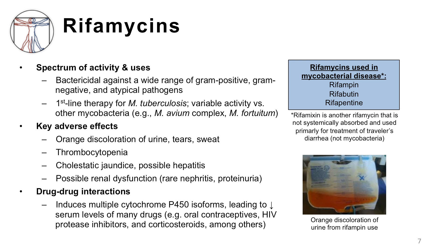Rifamycins are potent RNA polymerase inhibitors that have a broad spectrum of activity. However, it is important to note that this class of agents is primarily used in the treatment of mycobacterial disease, namely tuberculosis, and therefore these agents will be covered in more detail in mycobacterial and tuberculosis videos. One exception is the newest rifamycin, called rifaximin, which is similar in some ways to fidaxamycin in that this agent is not systemically absorbed from the intestines and achieves high intraluminal concentrations.